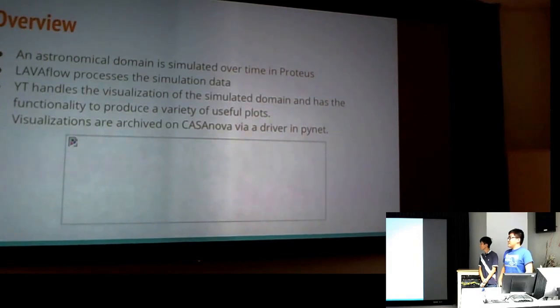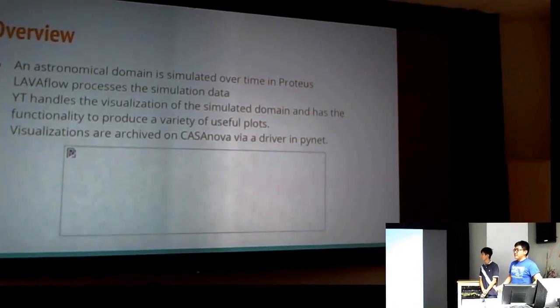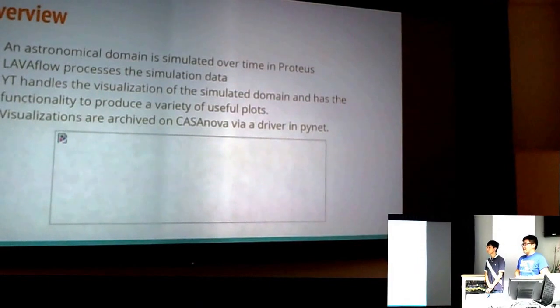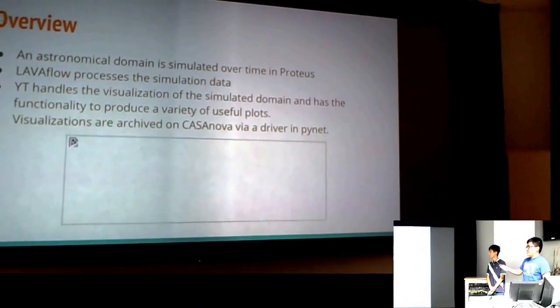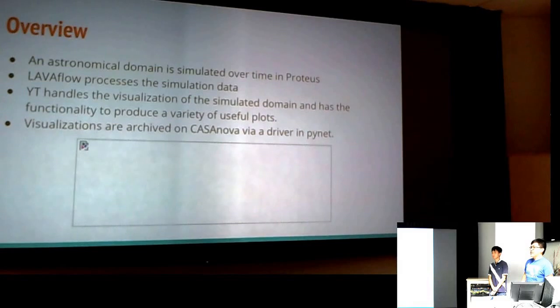So there's this other component called LavaFlow, which acts as kind of a strain to the simulation data, and then it gets inputted to YT. And the YT project is a Python project that we use to plot the domain, the space domain in whatever way is useful to us. And then, after we get those plots, we upload them, our job was to upload them to Casanova, in the PyNet.